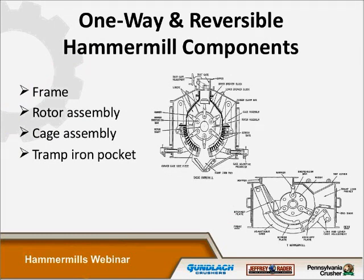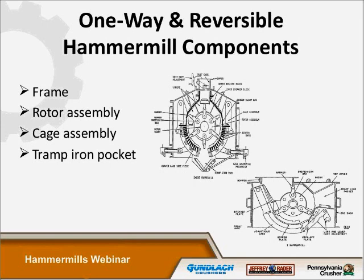I break the machines down into four basic sub-assemblies: all the crushers have a frame, a rotor assembly, cage assemblies, and a tramp iron pocket. We'll look at the rotor and the cages in detail, as that's really where the heart of the crushers are. In the reversible machines, the tramp iron pocket is in the bottom; in the one-way machines, it's in the back of the machine.